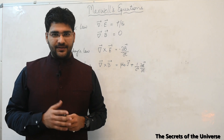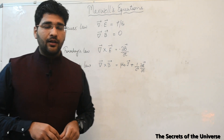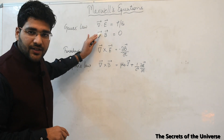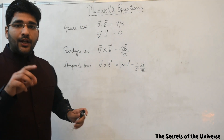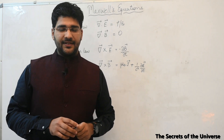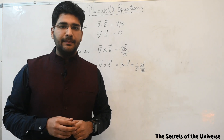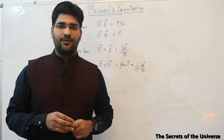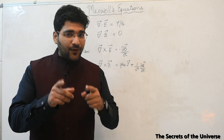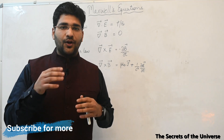Maxwell's equations are the backbone of classical electromagnetism, classical optics, and modern electronics. Before we start, it is very important to know the physical meaning of Maxwell's equations. For that, we need to understand what is the meaning of divergence and curl. Once we know these two concepts, it becomes very easy to understand the physical meaning of Maxwell's equations.